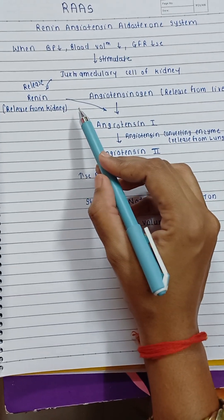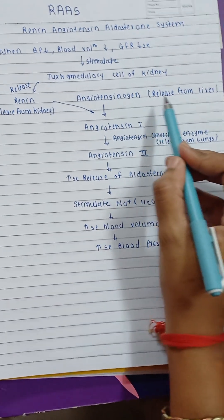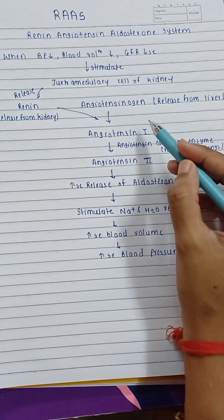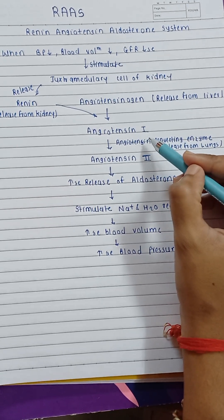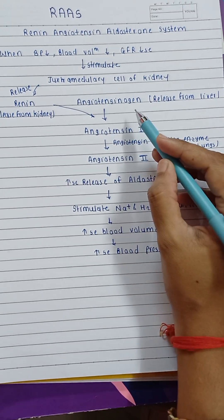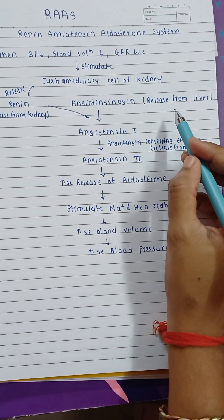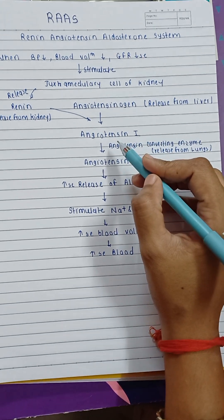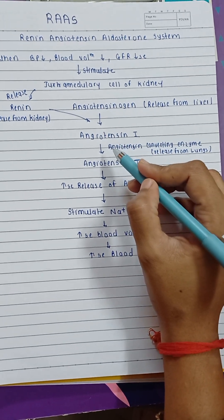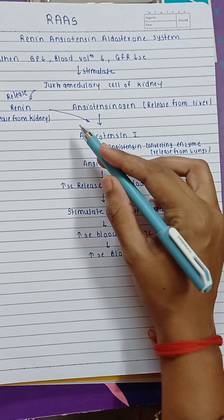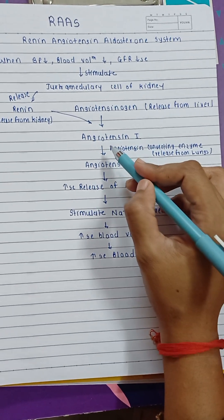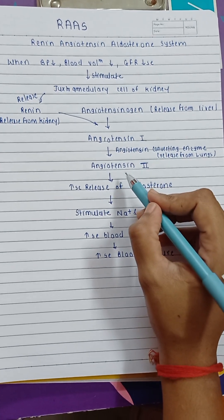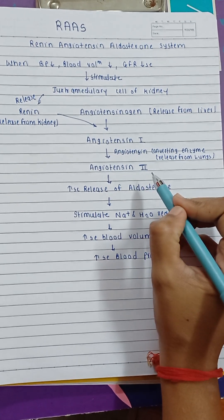In the presence of renin, angiotensinogen — which is released from the liver — is converted into Angiotensin I. So angiotensinogen converts into Angiotensin I in the presence of renin.